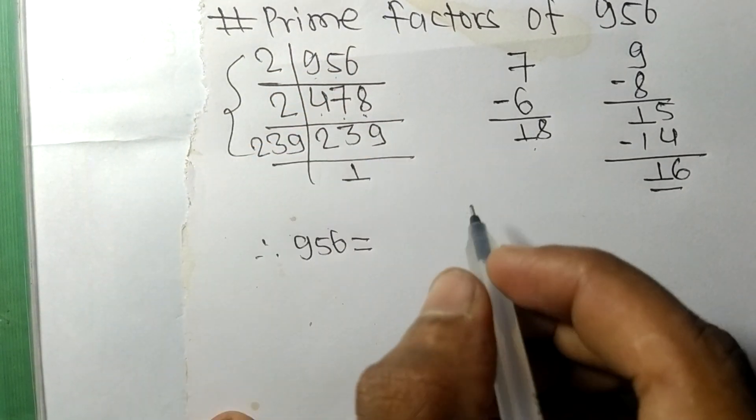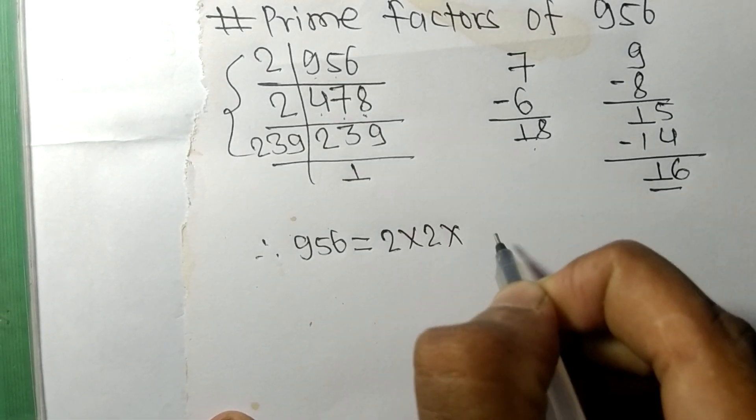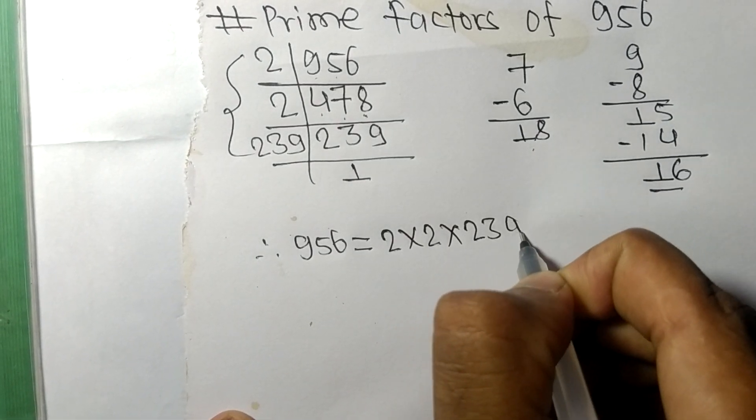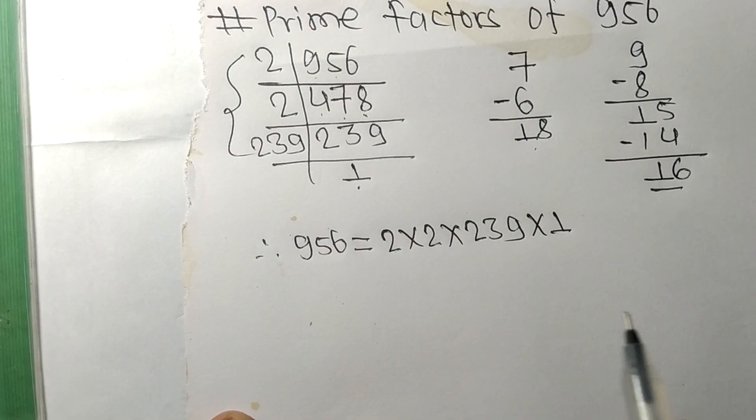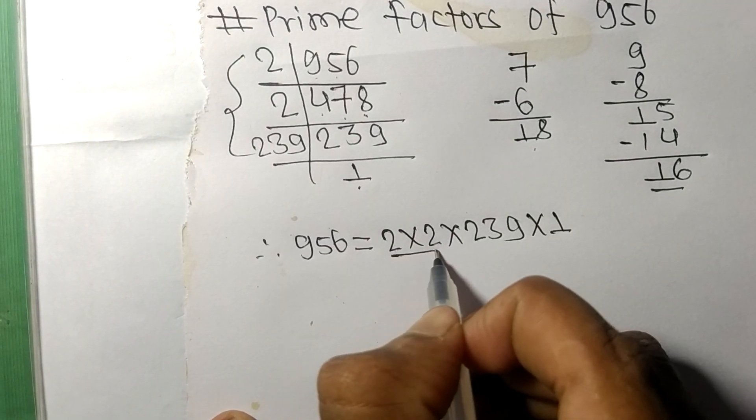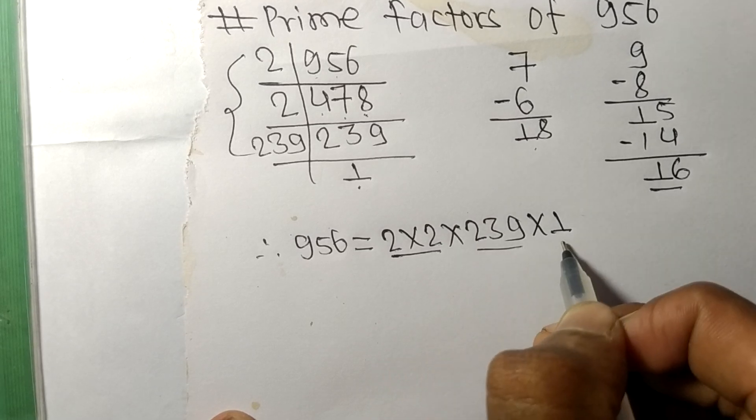Therefore 956 is equal to, from this side, 2 times 2 times 239. From here it is 1. So these, 2, 239, and 1 are the prime factors of 956.